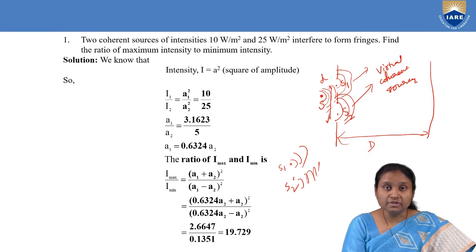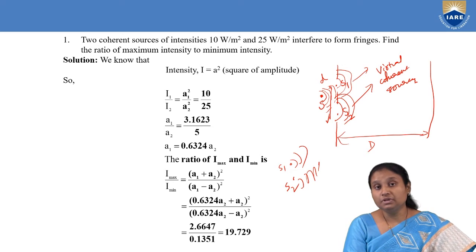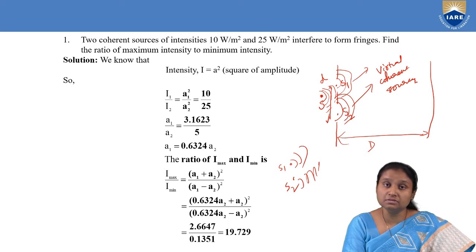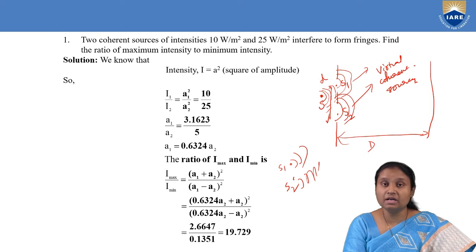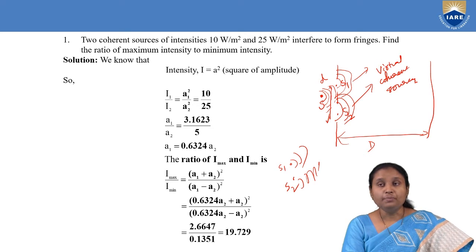In order to get an interference pattern on the screen and if you want these wavefronts to give rise to beautiful fringes on the screen, they have to be in phase with each other. That is what Young has done — he has taken a single source and divided the wavefront into two parts from that source by making them pass through two slits. That is why they are called virtual coherent sources.